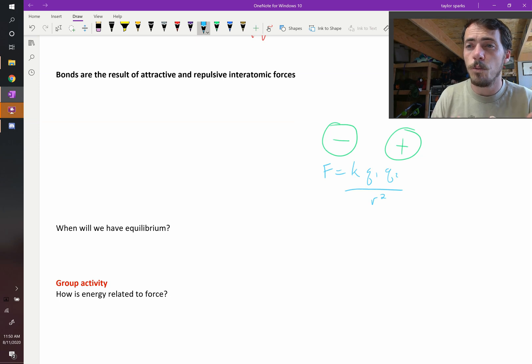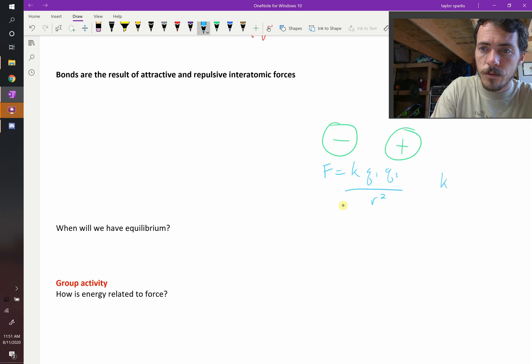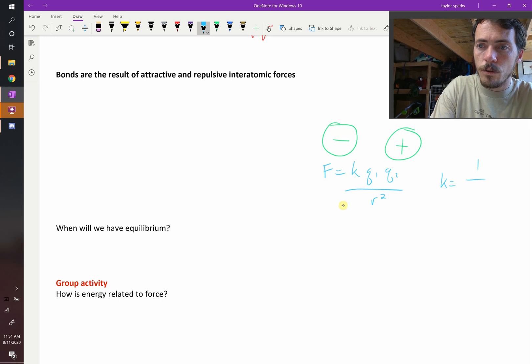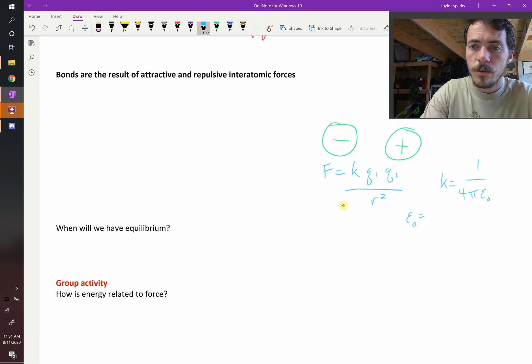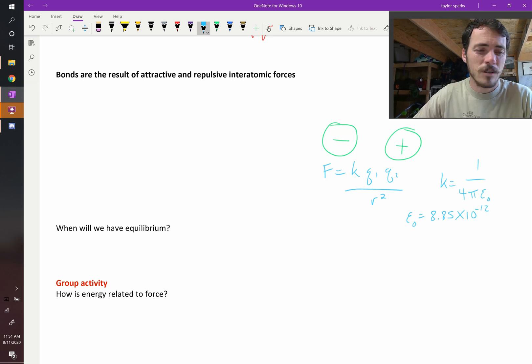Where k was a constant equal to 1 over 4π epsilon naught. K was equal to 1 over 4π epsilon naught, and epsilon naught was the permittivity of free space. Epsilon naught equals 8.85 times 10 to the negative 12 farads per meter.